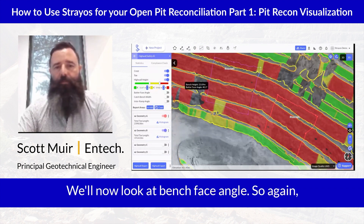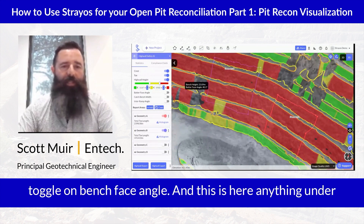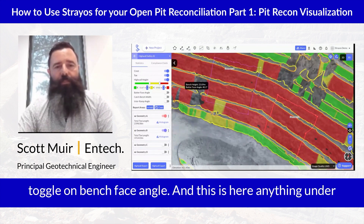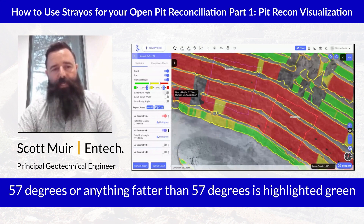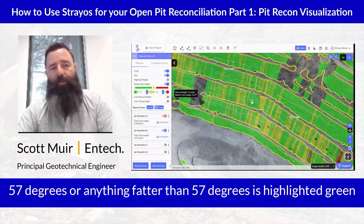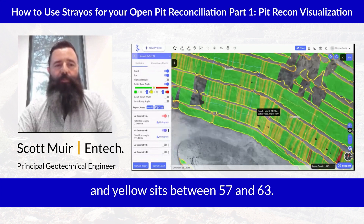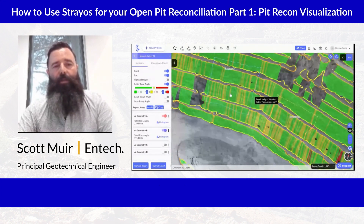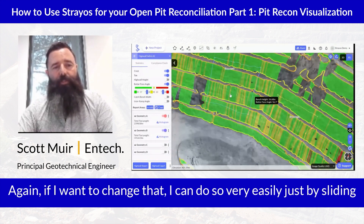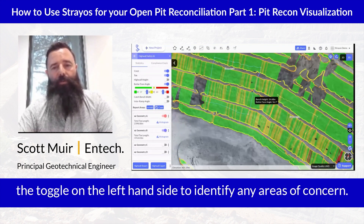We'll now look at bench face angle. Toggle on bench face angle — anything under 57 degrees, or anything flatter than 57 degrees, is highlighted green, and yellow sits between 57 and 63 degrees. If I want to change that, I can do so very easily just by sliding the toggle on the left-hand side to identify any areas of concern.